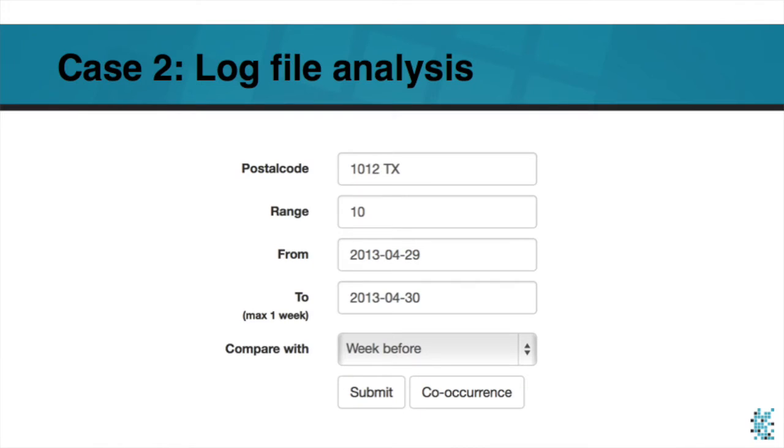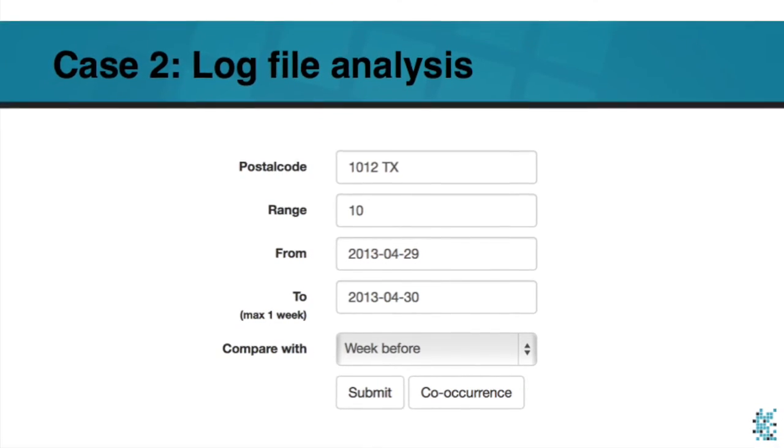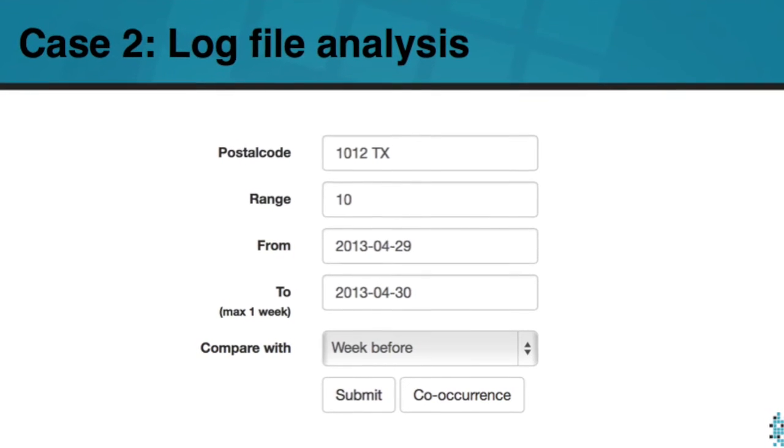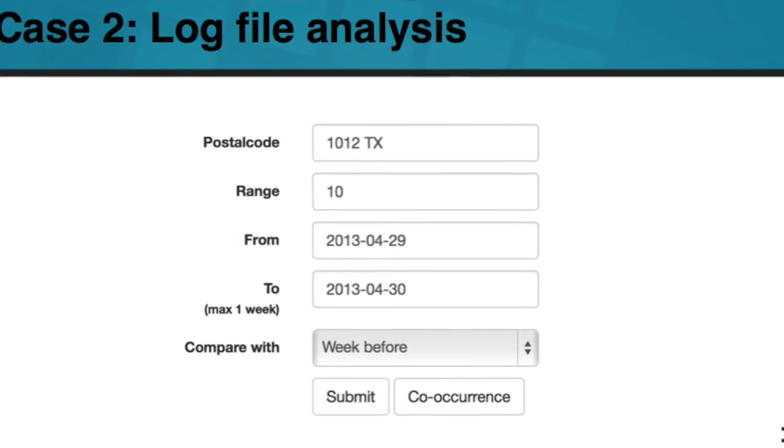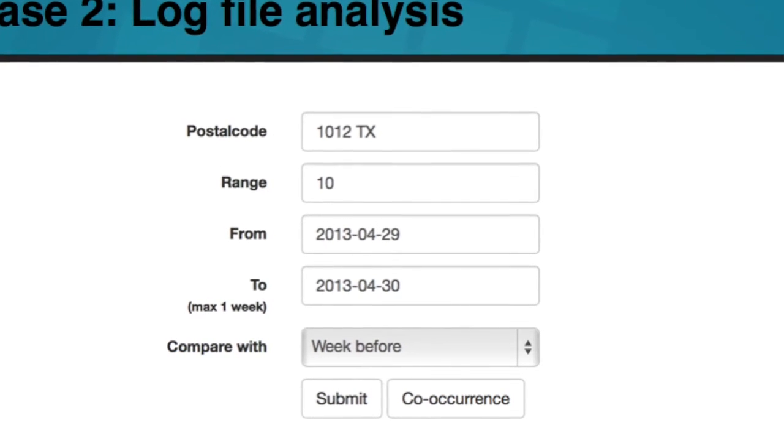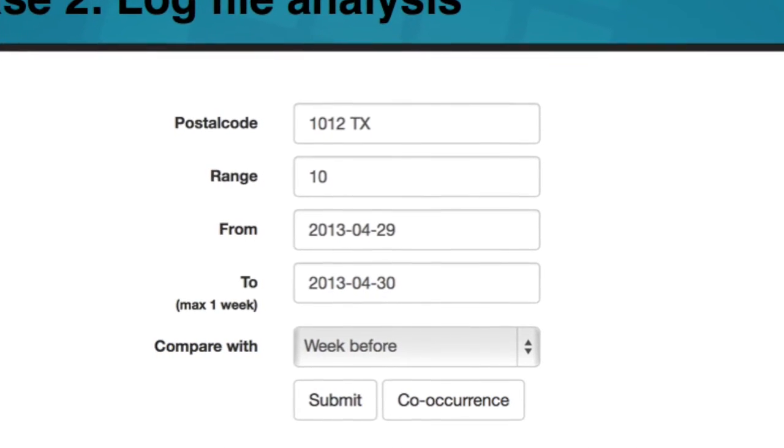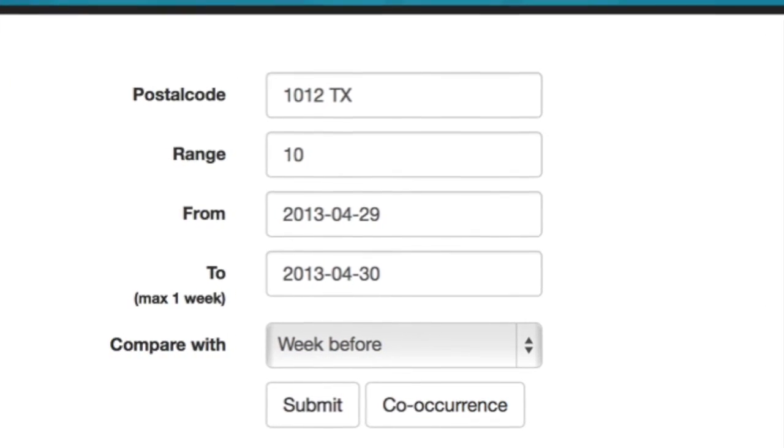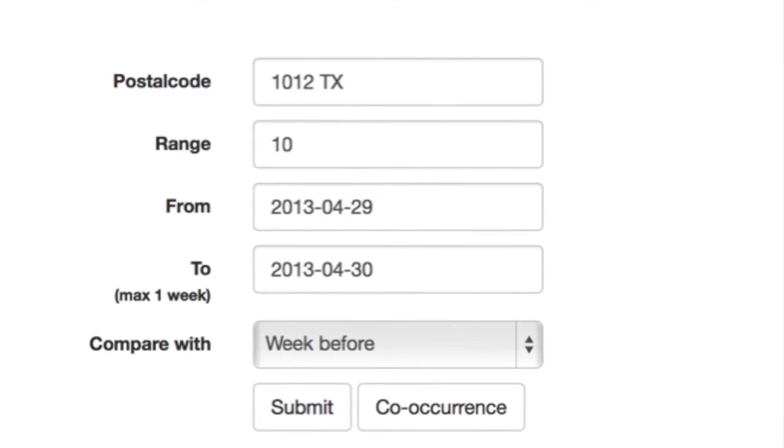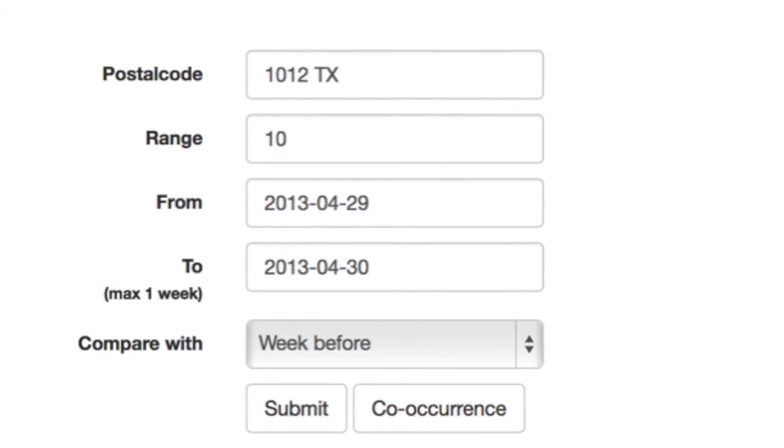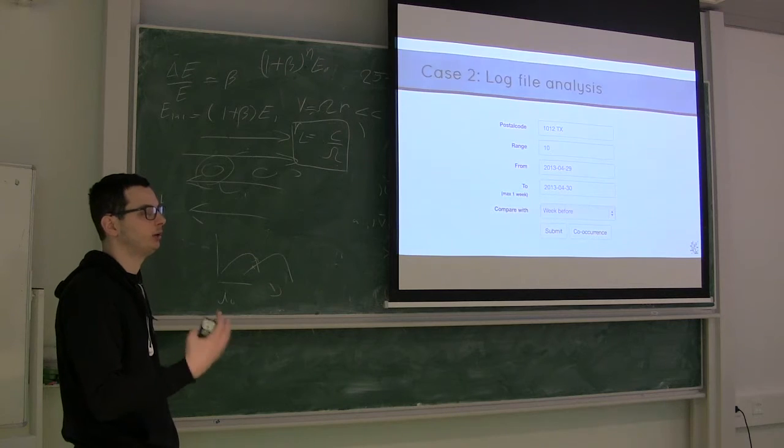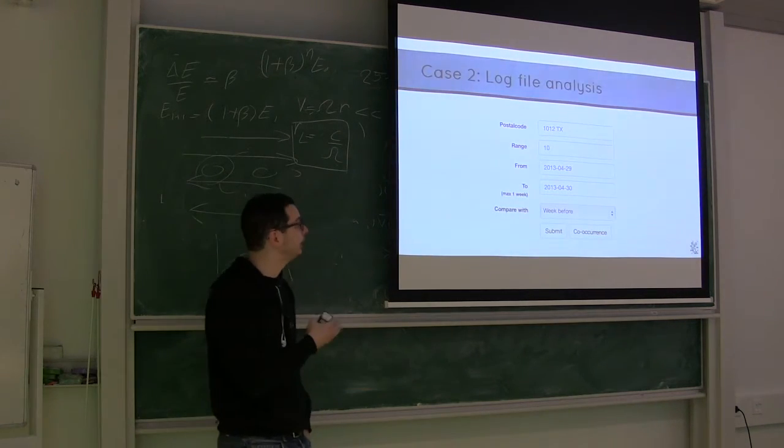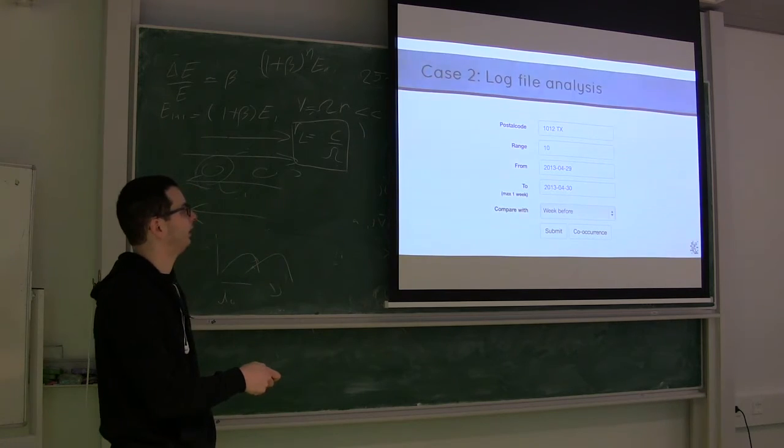So the portal looks like this. I mean the portal, the product that we built looks like this. You put a postcode in there. You put a range in kilometers from that postcode. And then you decide the date that you want to analyze. In this case, this is Queen Day three years ago when it still was on the 30th of April. And we want to compare it the week before. So basically see what people searched on Queen's Day and the day preceding Queen's Day on this portal.